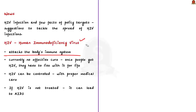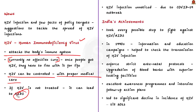HIV is feared because it has no effective cure currently — once people get HIV, they have to live with it for life. However, with proper medical care, HIV can be controlled and it is not a fatal disease. When discussing HIV, we also hear about AIDS — Acquired Immunodeficiency Syndrome. Many people confuse the two. If an HIV patient is not treated, it leads to AIDS. Not all HIV patients will have AIDS; AIDS is the final condition if HIV is left untreated.